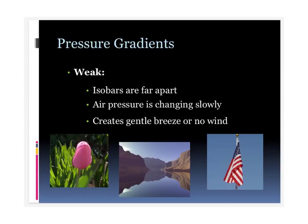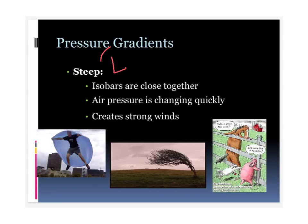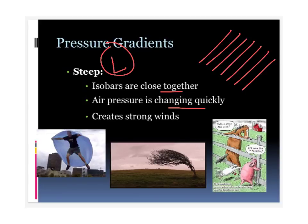When we have a weak pressure gradient, the isobars are very far apart, meaning pressure is changing slowly, and we get a very nice day. We generally see weak pressure gradients around high pressure systems, and we get a gentle breeze or no wind — far apart isobars, air pressure changing slowly, pretty calm weather. When the pressure gradient is steep, usually around low pressure cells, the isobars are very close together. Pressure is changing very quickly, and we tend to have very strong winds, because pressure is going from high to low very fast — that gives us our strong winds and bad weather.